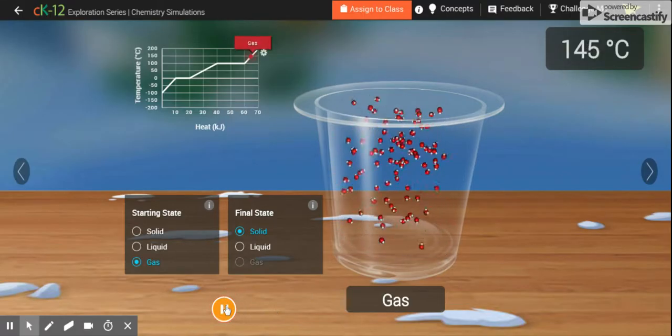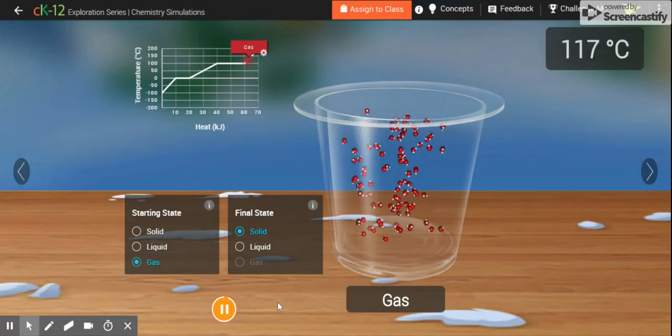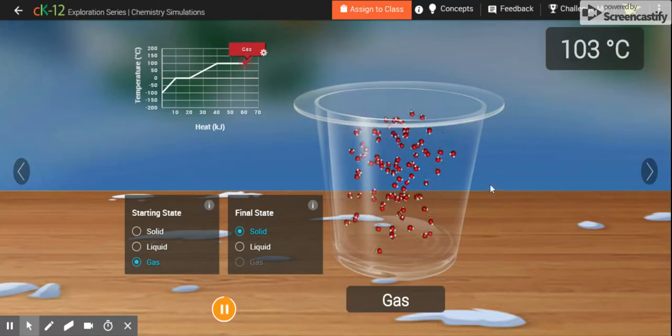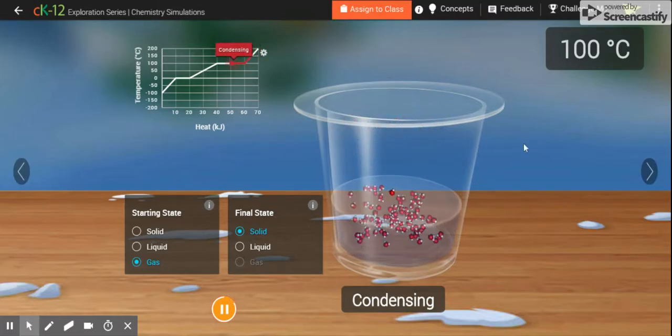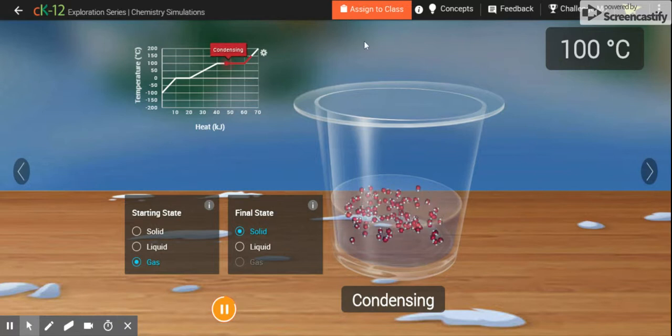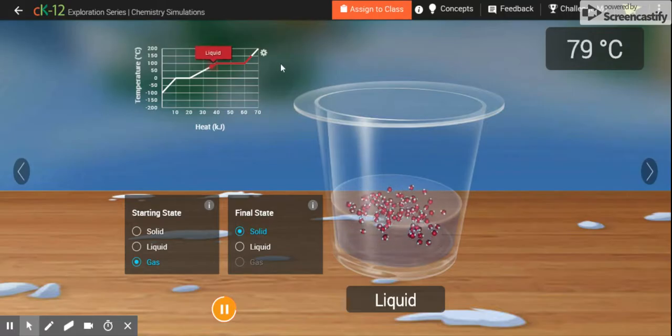So let's get this simulation rolling. All right, our temperature is dropping. Okay, our water molecules are moving very quickly. But now you can see that the gas is starting to turn to a liquid. Our cup is filling up with water and our temperature is at 100 degrees Celsius and it's leveled out right here in this graph.